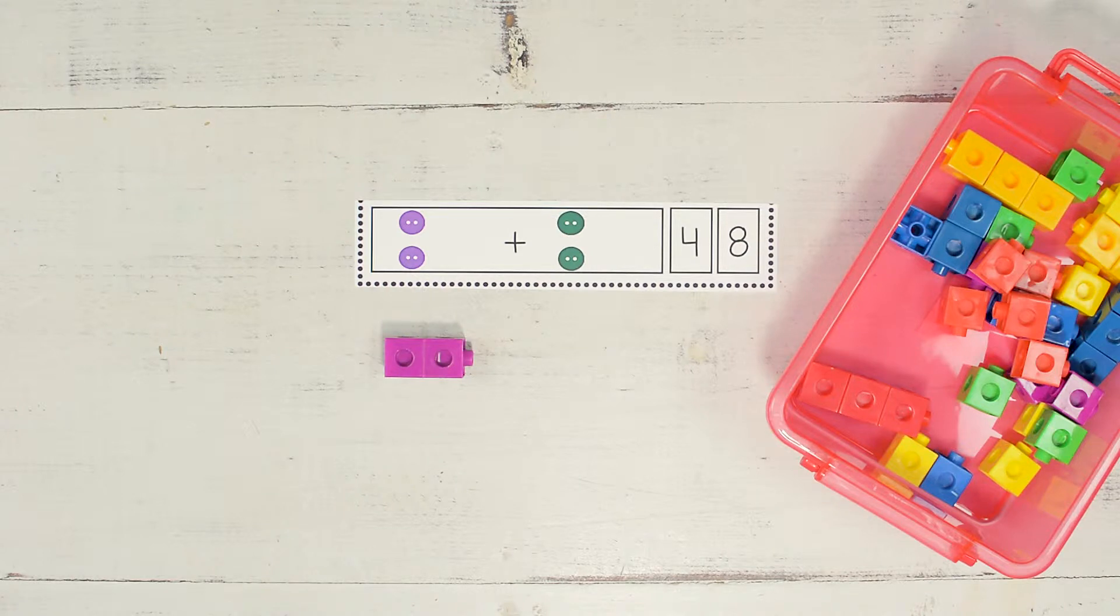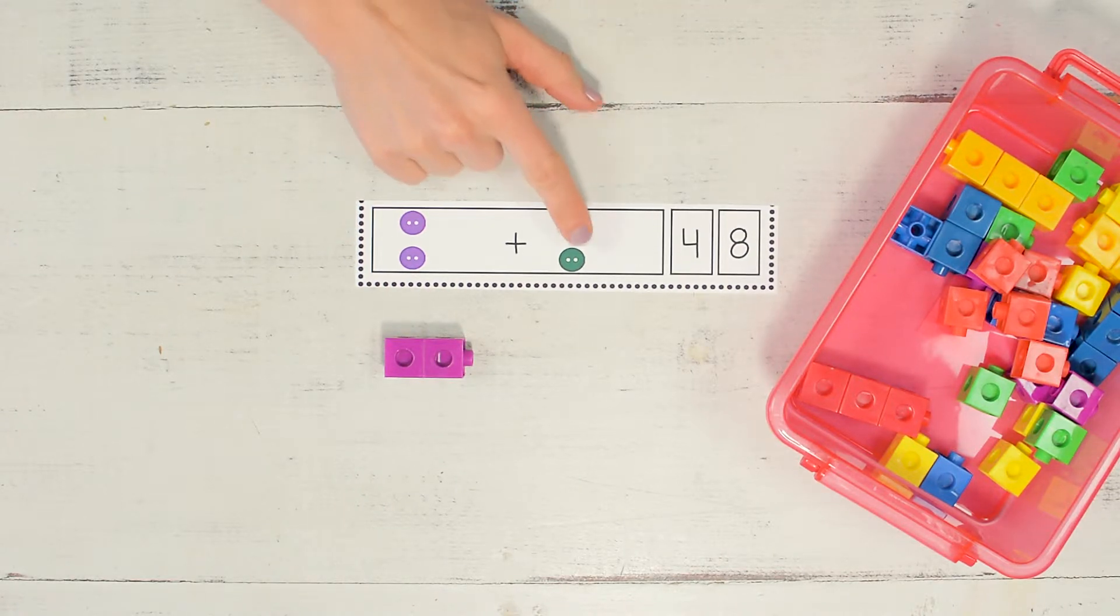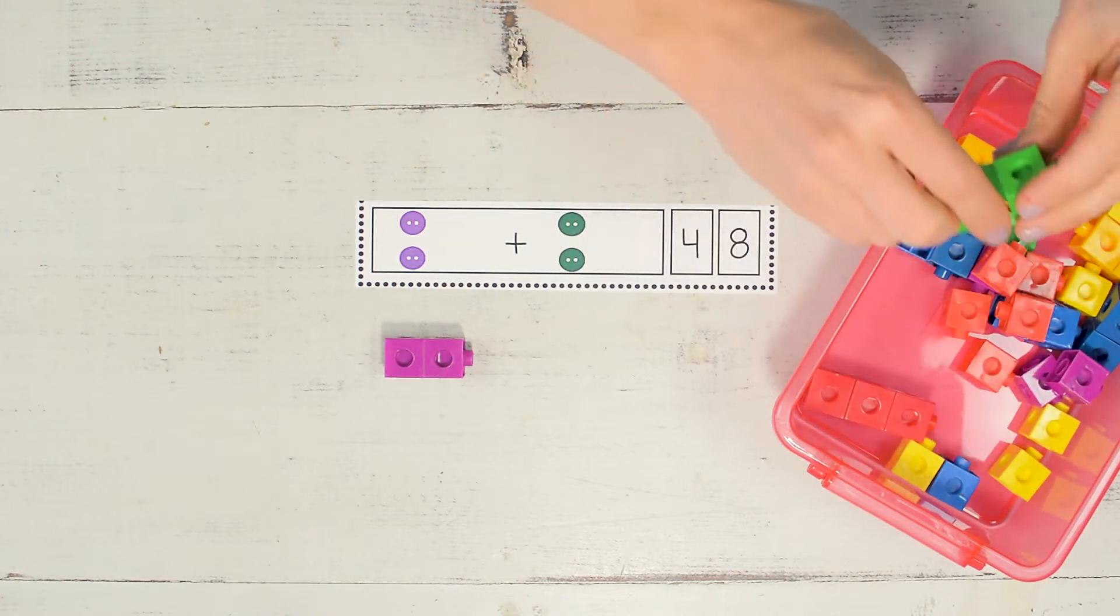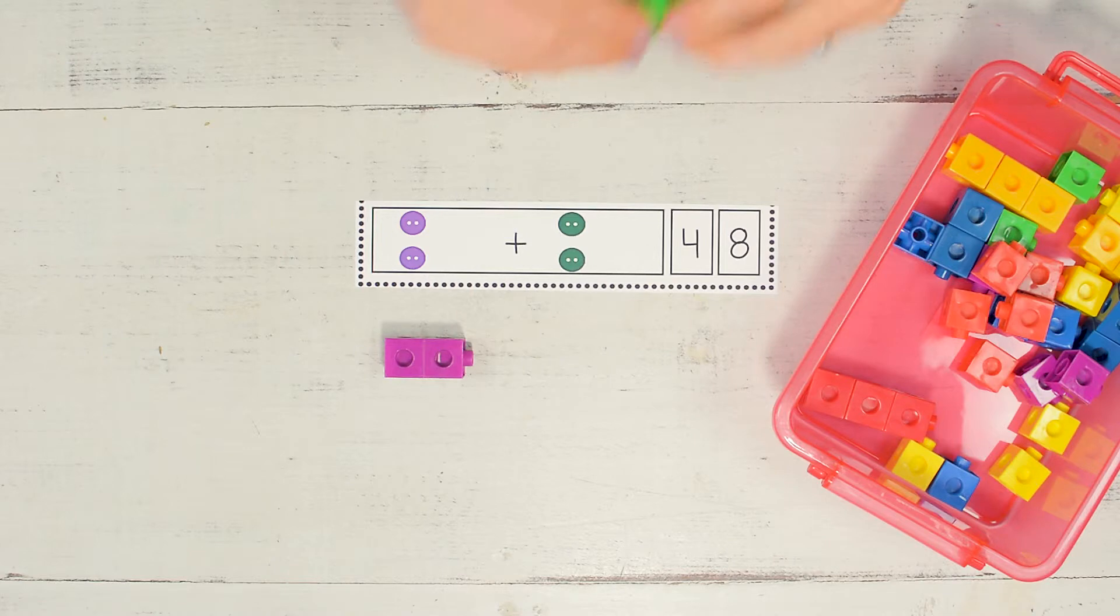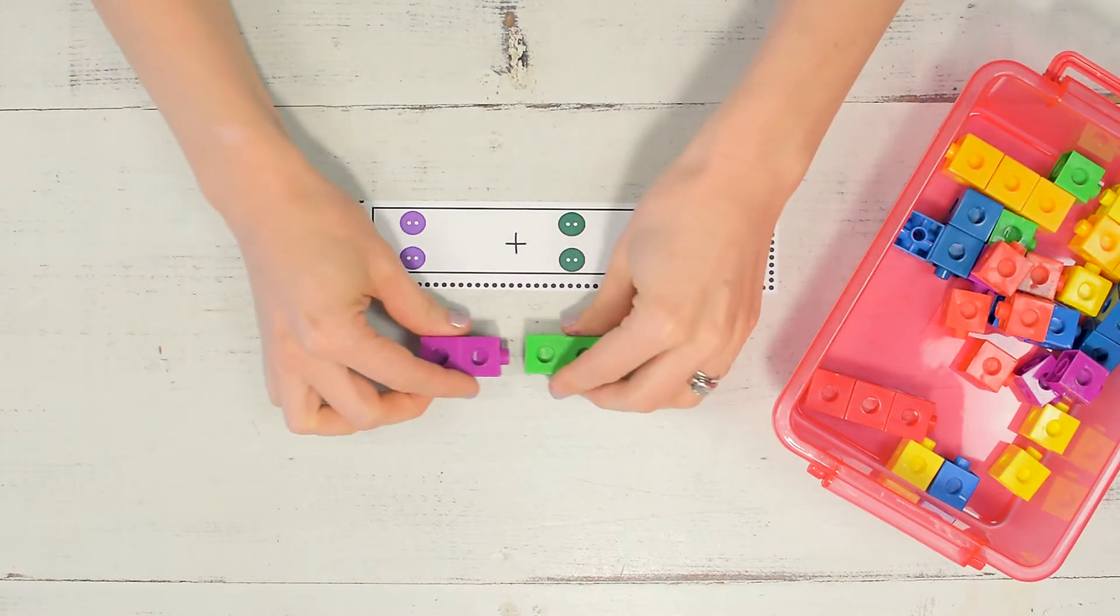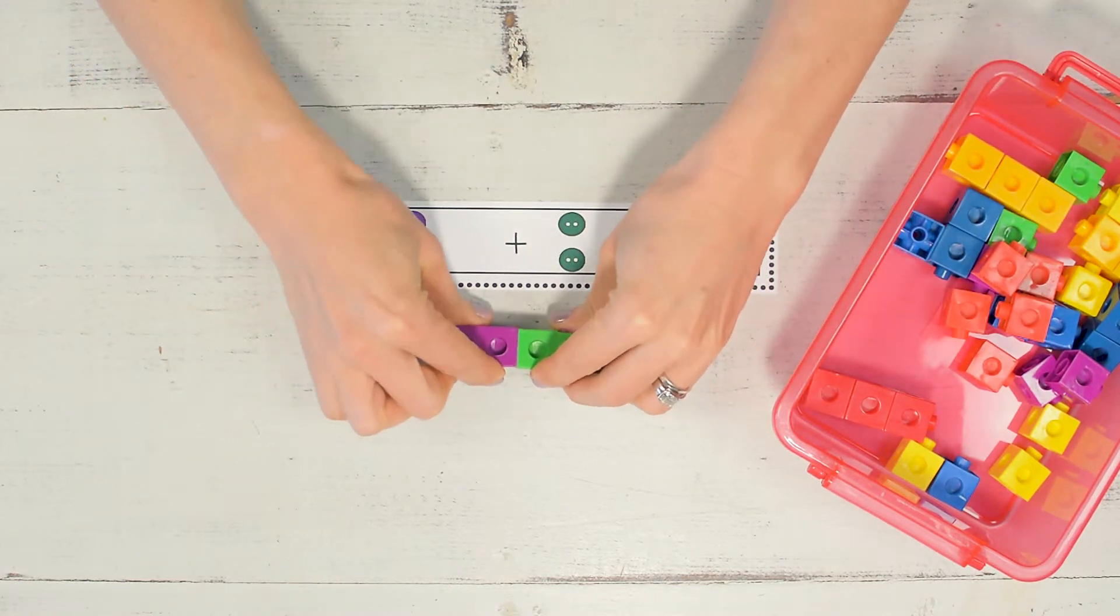How many green buttons do we have? One, two. Grab my green snap cubes and snap them together and I'm going to now snap all of them to find the sum.